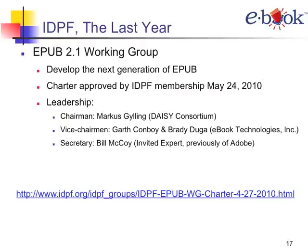We just kicked off the development of the next version of the standard, which I'm calling EPUB 2.1 — it could well be 3.0. The charter for this work was approved in May by the board. Marcus Gilling from the DAISY Consortium is chairing the group; I'm vice chair along with Brady, and Bill McCoy, formerly of Adobe, is secretary. There's very broad involvement — 140 participants is a lot of people for a technical working group, but it's going well so far.